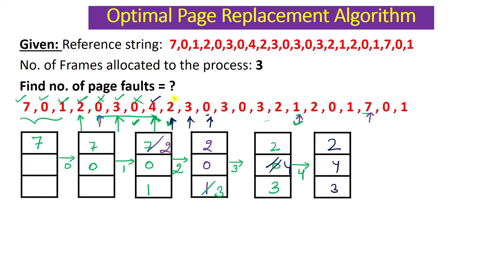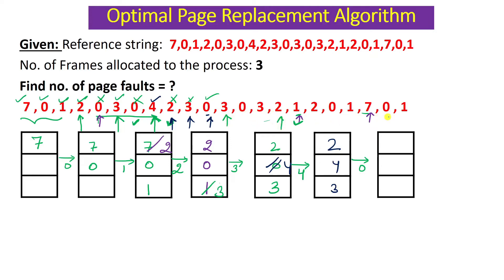Page 2 is next — it is already here, so no page fault. Page 3 is also already here — no page fault. Page 0 arrives and generates a page fault because it is not here. Looking ahead for 2, 4, and 3: three is here, two is here, but four is not in the future reference string at all — it will not be demanded again. So four should be replaced. New frame contents: 2, 0, 3.